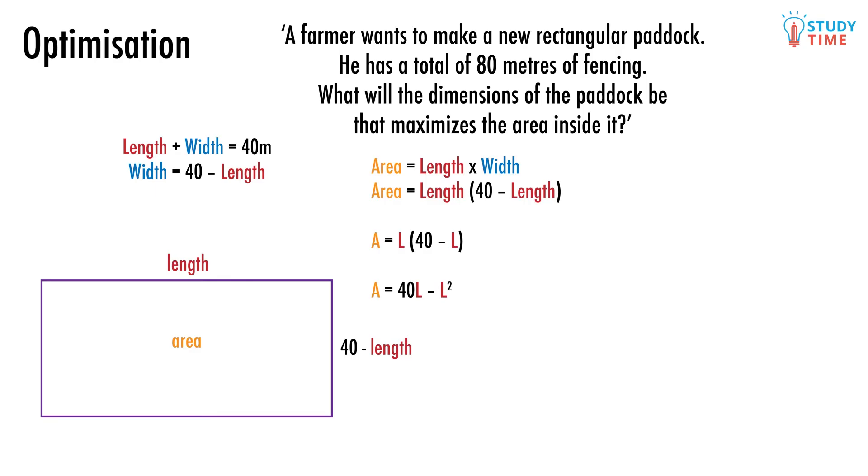This brings us to the equation area equals length times 40 minus length. Let's replace area with A and length with L to make things a little easier to read. So A equals L times 40 minus L. If we go and expand this equation, we get A equals 40L minus L squared. Okay, so we spent all this time coming up with a single equation, but now what?